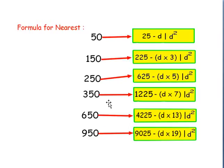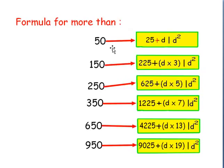Knowing that formula, we can derive the formula for other numbers. For numbers nearer to 50: 25 minus D, and D square. For numbers nearer to 150: 225 minus 3 into D, and D square. For 250 and 650: 625 minus 5 into D, and D square. Up to 950 we have: 9025 minus 19 into D, and D square. Now 95 square: 5 times 5 is 25, and 9 plus 1 is 10, so 9 into 10 is 90. Hence the square of 95 is 9025.